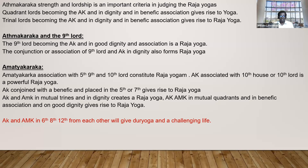Atmakaraka and the 9th Lord is one of the best combinations. AK-AMK combination in the Dasamsa, in the Lagna or 10th house, is one of the greatest Rajayoga formations. Atmakaraka and the 9th Lord combination gives a lot of spiritual strength, wisdom, learning, and illumination. The 1st, 5th, 9th — the Kendra-Kona lords and the Charakaraka lords blended together — depending on who becomes the Atmakaraka and Amityakaraka, if it is Sun, Moon, Mars, or Jupiter they are power planets; if Mercury, Venus, Saturn it is a different level.